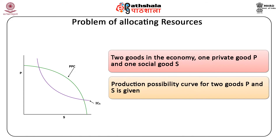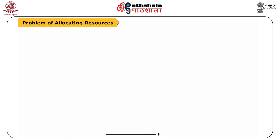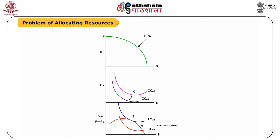The production possibility curve for two goods P and S is given. The production possibility curve, or PPC — also called the transformation function or production frontier — shows the possibilities open for increasing the output of one good by reducing the output of the other. The next assumption is that the tastes of consumers are given; that is, we have a utility map for Mr. A as well as for Mr. B. To show efficient allocation of a social good in a general equilibrium framework, first we select a given level of utility for individual A, depicted by his indifference curve ICA. Subtracting it vertically from the transformation curve gives another curve known as the residual curve or consumption curve for B, which reveals the maximum private good available for B given A's utility level.